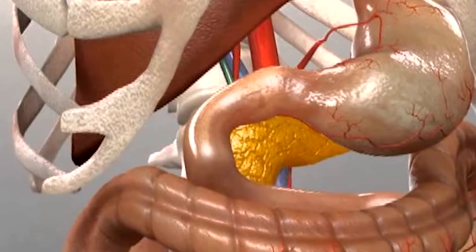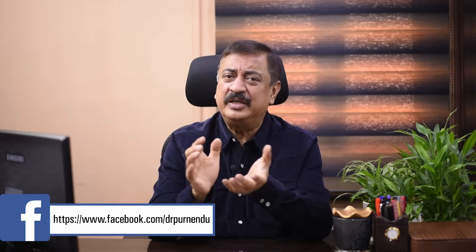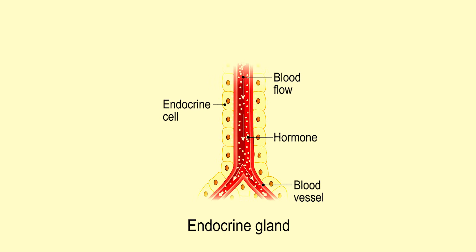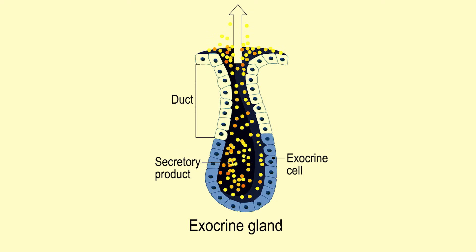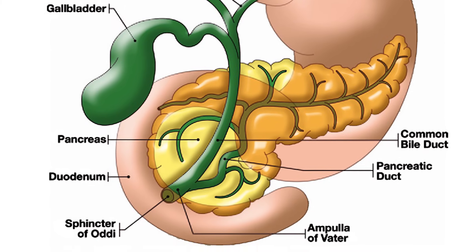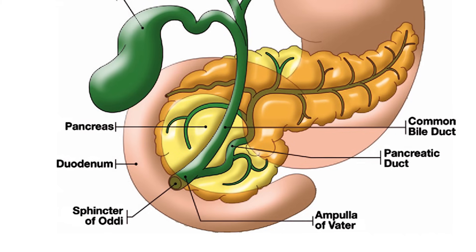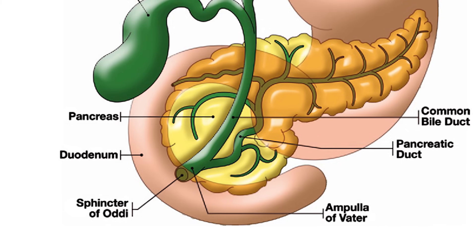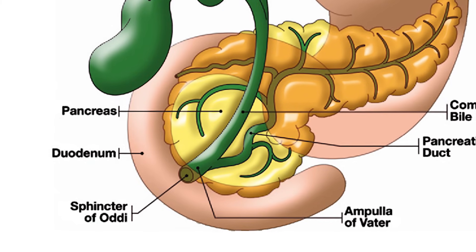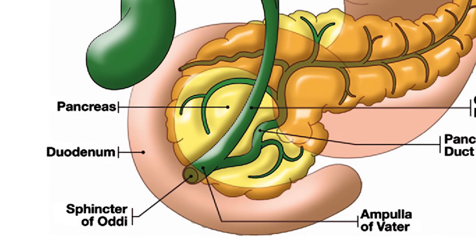Trying to understand the location: anatomically, the organ is in the upper part of the abdomen. It lies just behind the stomach. Now, the pancreas is actually a gland — and it's a mixed exocrine gland. Endocrine glands pour hormones into the bloodstream, while exocrine glands pour their secretion through a duct into the lumen or to the exterior. The pancreas has both functions. It produces digestive enzymes which come through the pancreatic duct, and it joins with the common bile duct to form the hepatopancreatic duct, opening in the duodenum at an ampulla called the ampulla of Vater, guarded by a sphincter called the sphincter of Oddi.